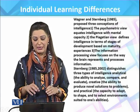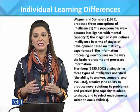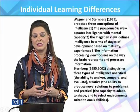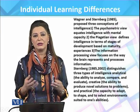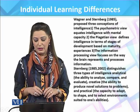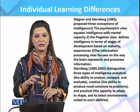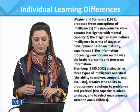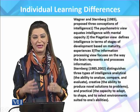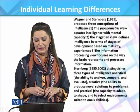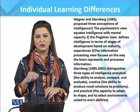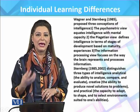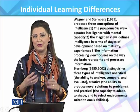The Piagetian view considers intelligence in terms of different developmental stages we have already covered: sensory-motor, pre-operational, concrete operational, and formal stages, which refer to stages of maturity. The information processing view focuses on the way the brain represents and processes information — how the brain represents information and how that information is processed in the mind.